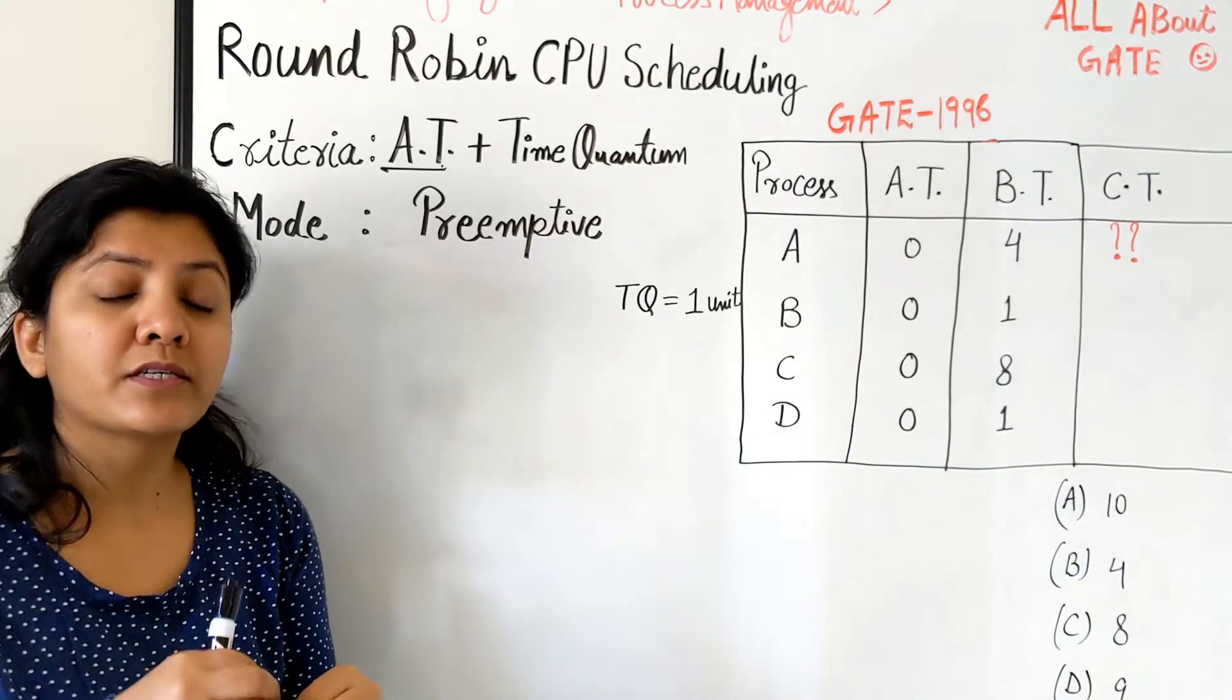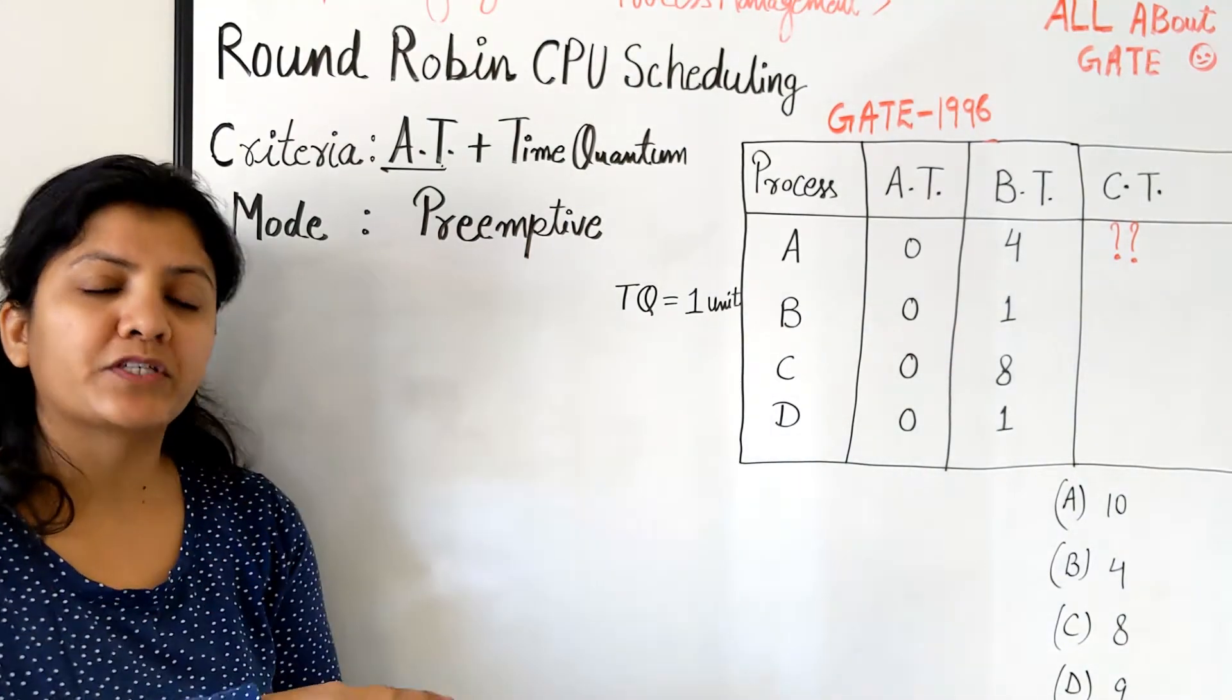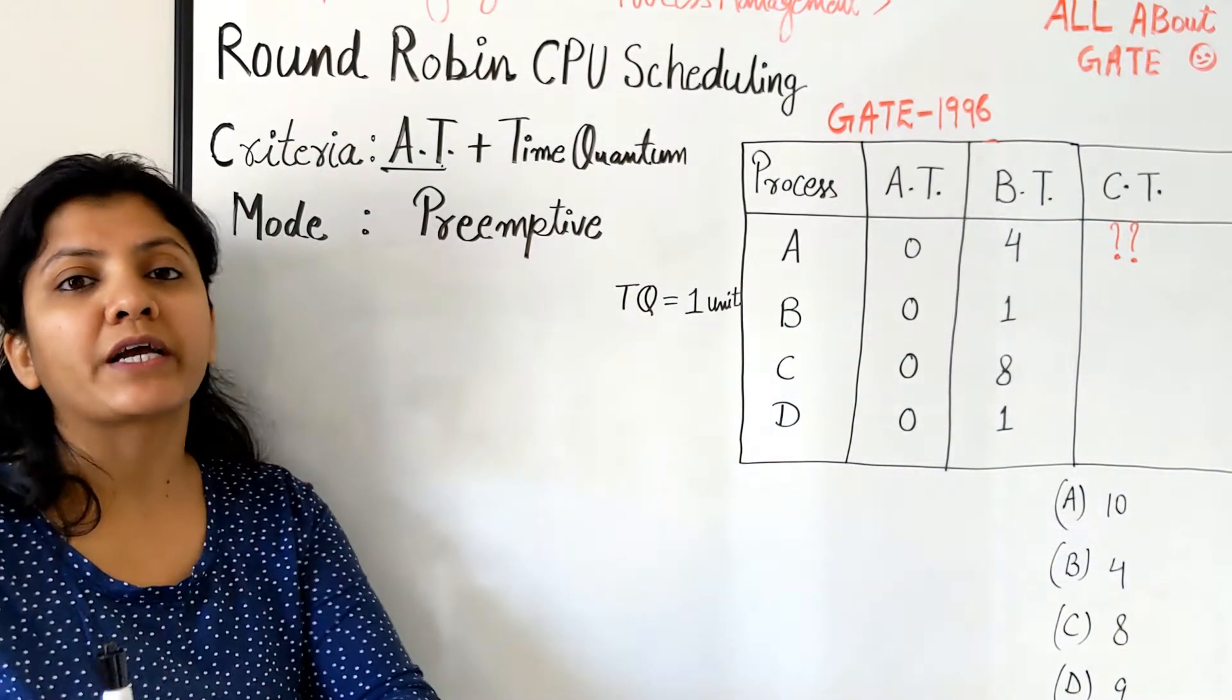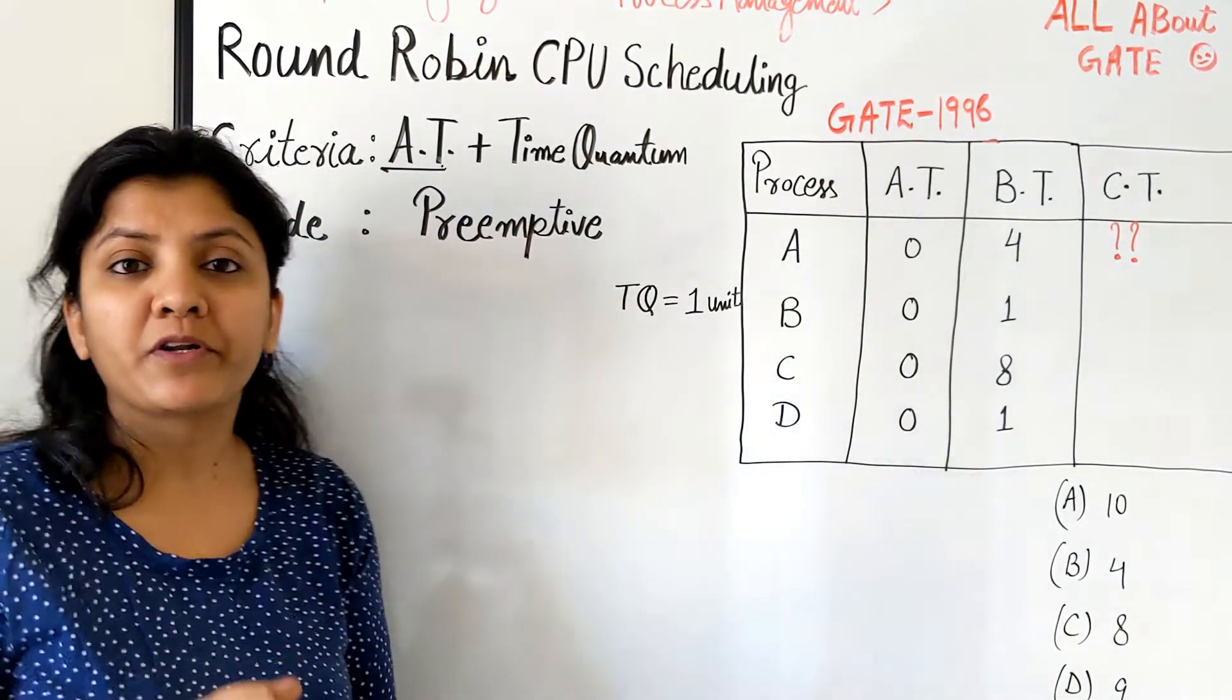Every time a process is given execution on the CPU, it runs for one time quantum and then gets context switched from another process which again runs for the next time quantum. So it is actually going to work absolutely on the preemptive mode.